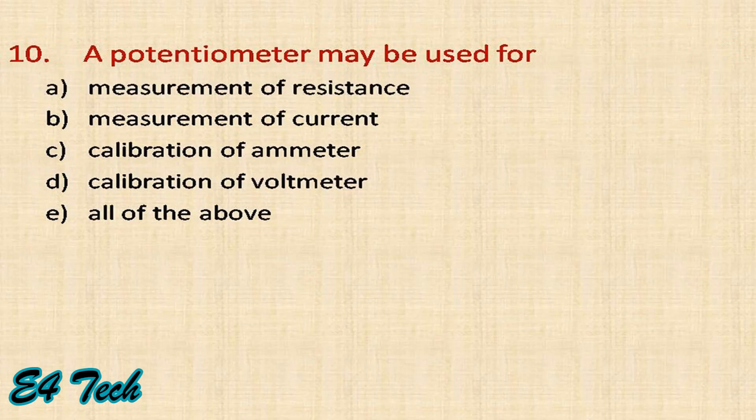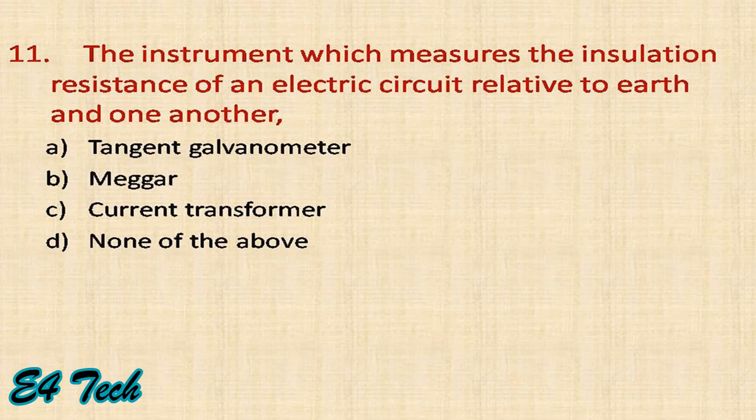A potentiometer may be used for measurement of resistance, measurement of current, calibration of an ammeter, and calibration of a voltmeter. The answer is all of the above. The instrument which measures the insulation resistance of an electric circuit relative to earth is the Megger.